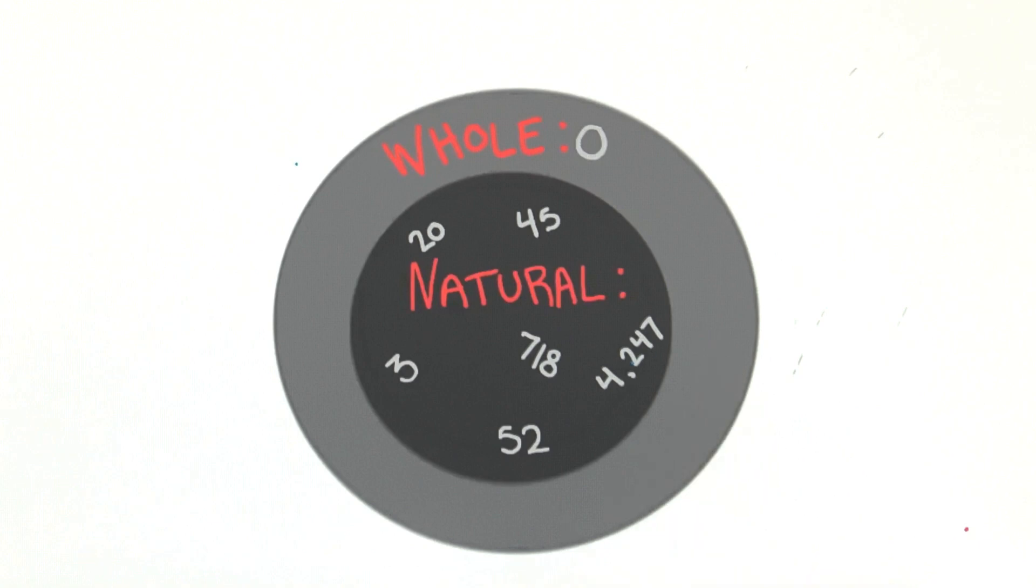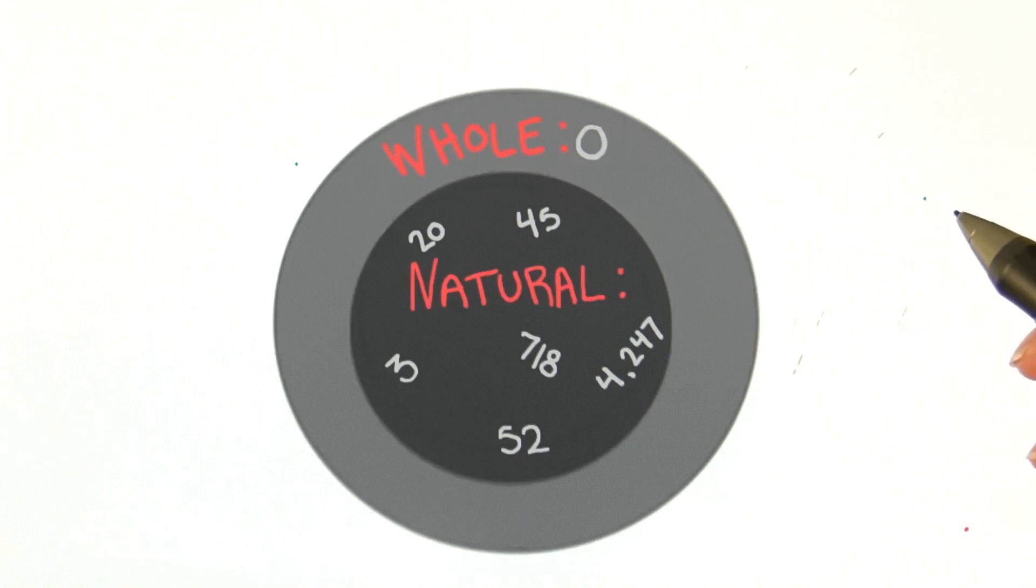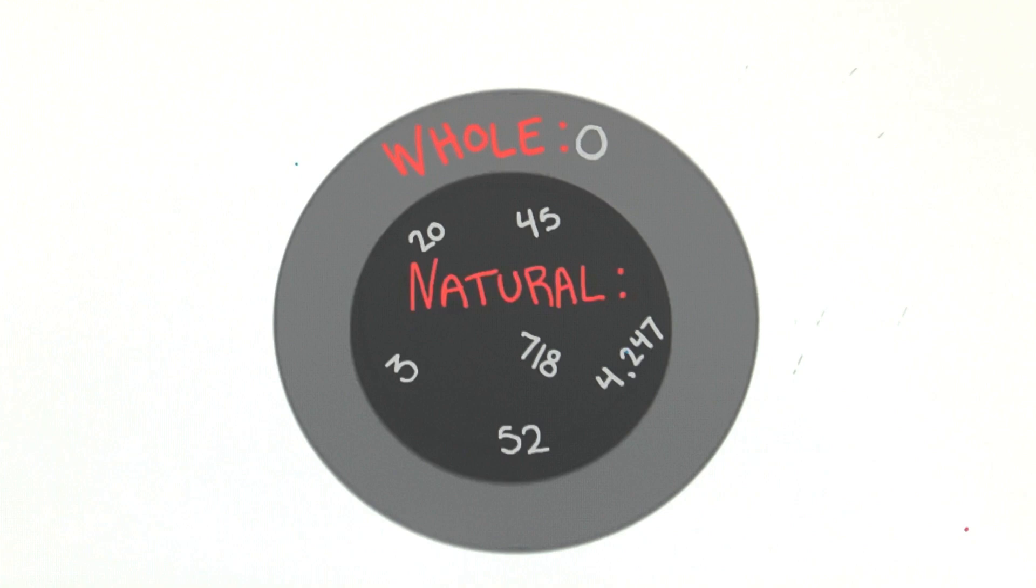If we pick any number, we can point to which category or categories it fits into by pointing somewhere on this diagram. For example, if I pick 18,